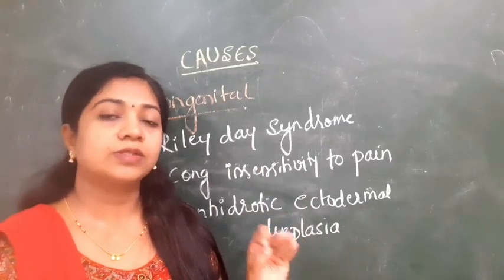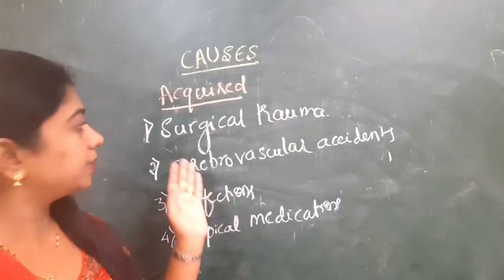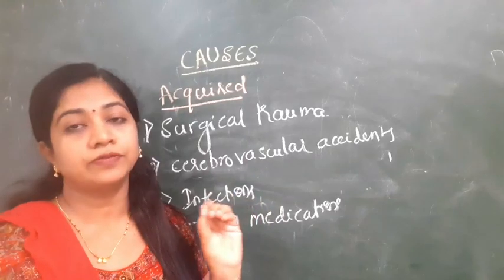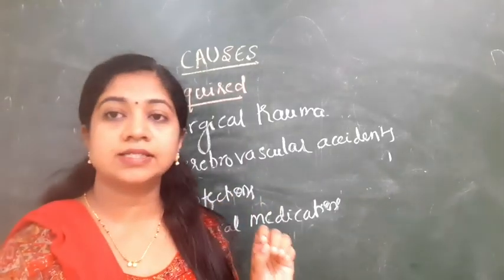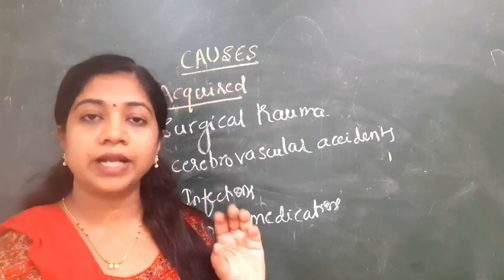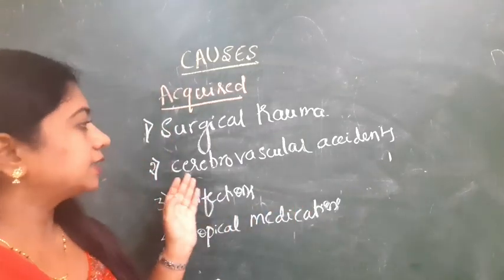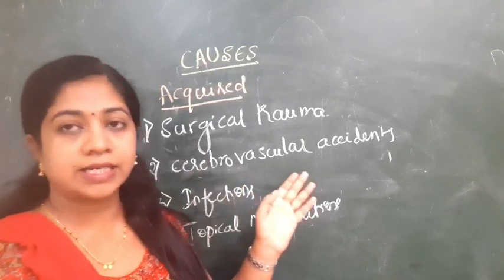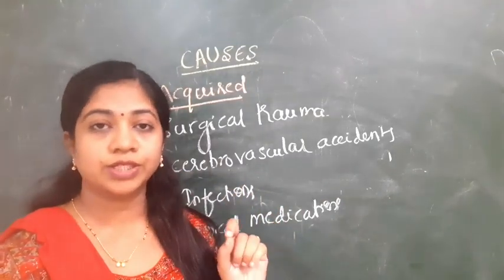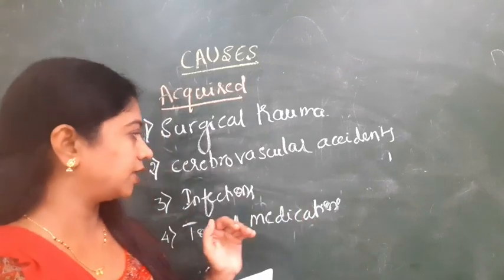In acquired causes: surgical trauma to the eye such as penetrating keratoplasty, large limbal incisions, or even following LASIK, which can damage limbal epithelial cells. Cerebrovascular accidents like multiple sclerosis, aneurysms, and tumors like acoustic neuroma or neurofibroma can all lead to damage to the trigeminal nerve.